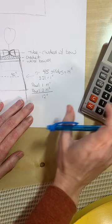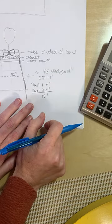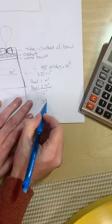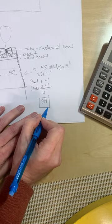3.21 times 12 equals 38.52. So essentially, we need 39 as the total number of stitches.